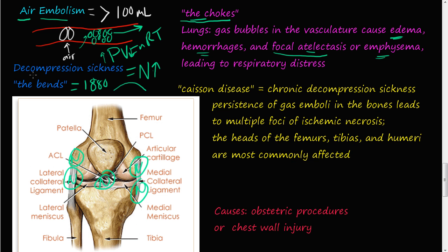If you have chronic decompression sickness, you can develop caisson disease. This is persistent gas emboli in the bones, leading to multiple foci of ischemic necrosis. The heads of the femurs, tibias, and humeri are most commonly affected.